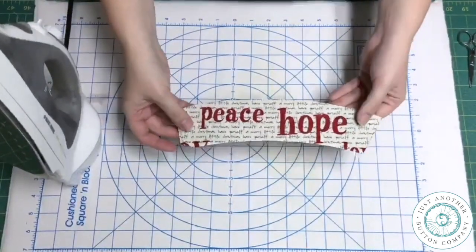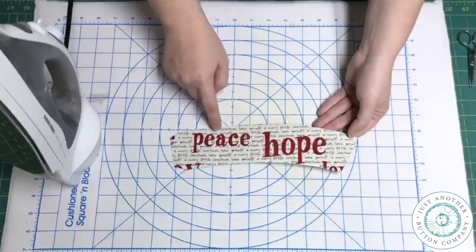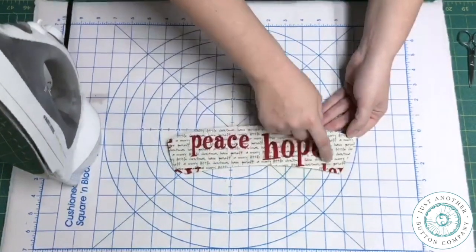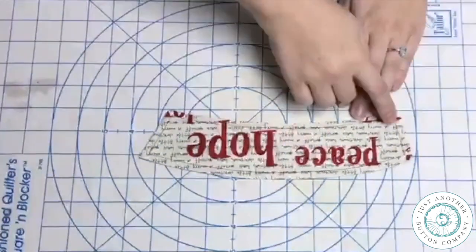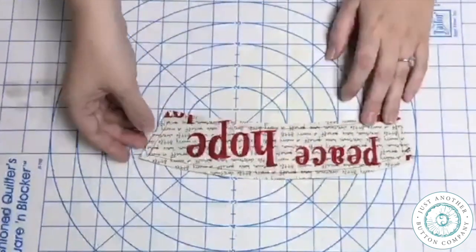Now I'm going to machine stitch one quarter of an inch from the edge all the way around the shape. Okay so now I've sewn around the edges a quarter of an inch from the edge with a straight stitch.